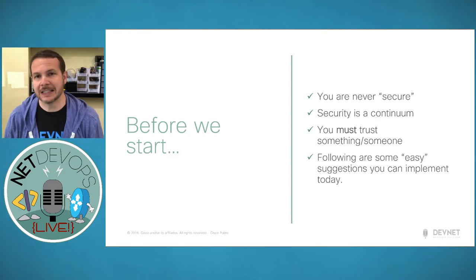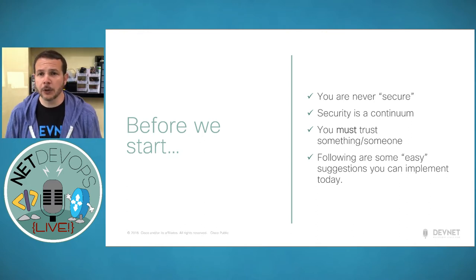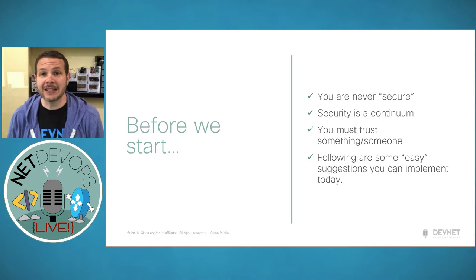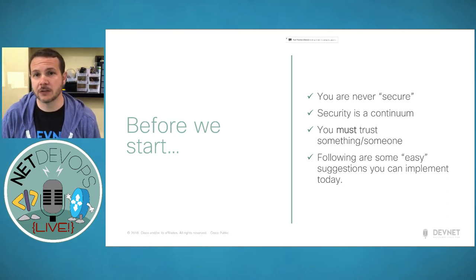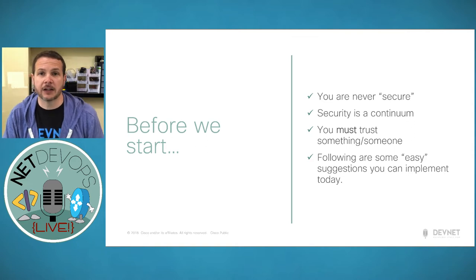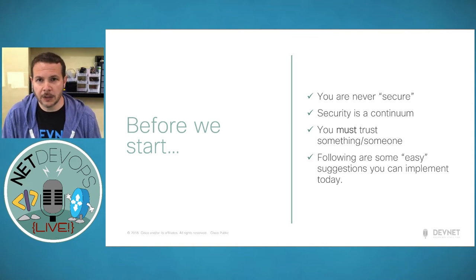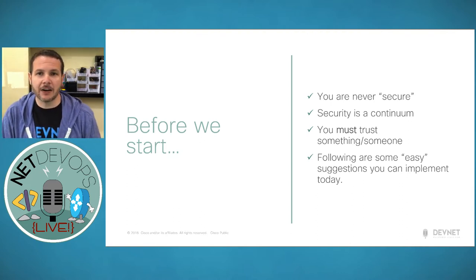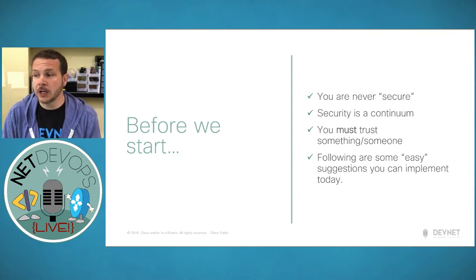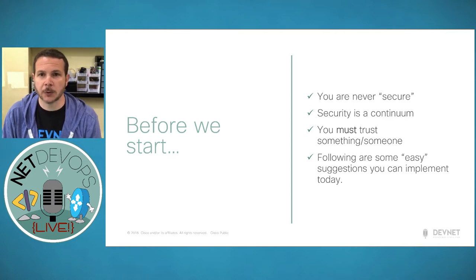What we're going to go through today are some easy suggestions that everybody should be able to take advantage of starting in their work today. We're not going to cover every possible thing you could do to automate more securely. My goal for today's session was to hit some easy areas — some low-hanging fruit — so that we can automate more securely as we go through.